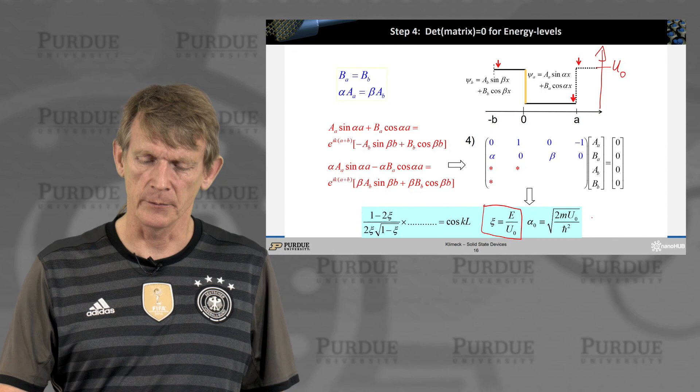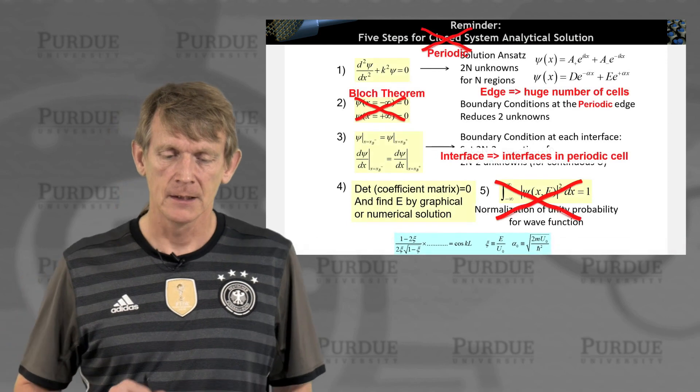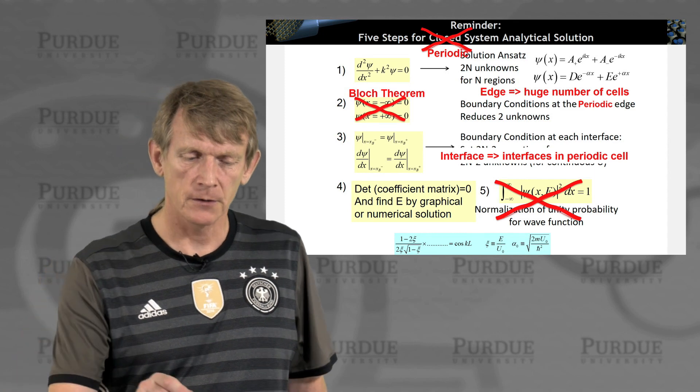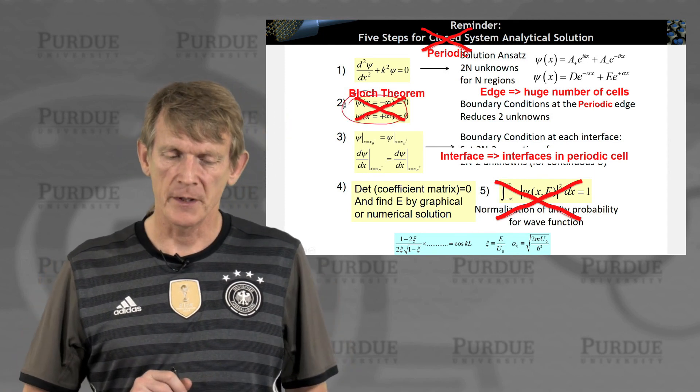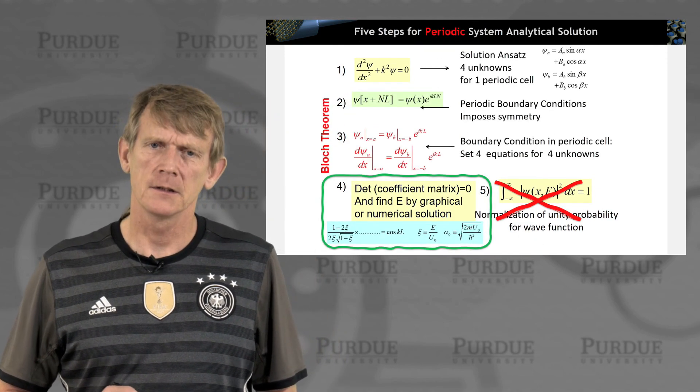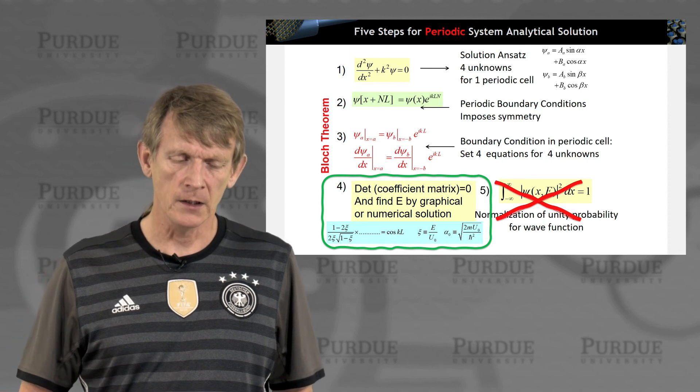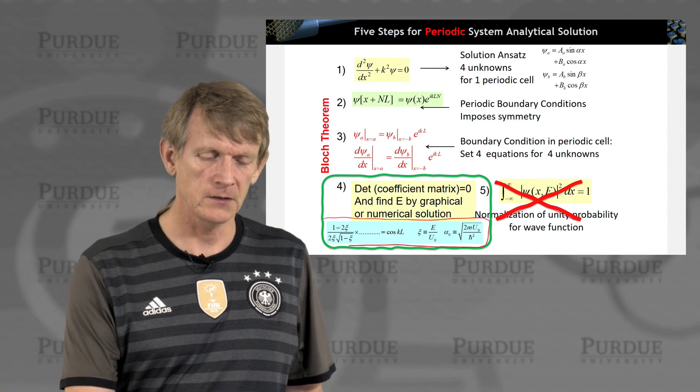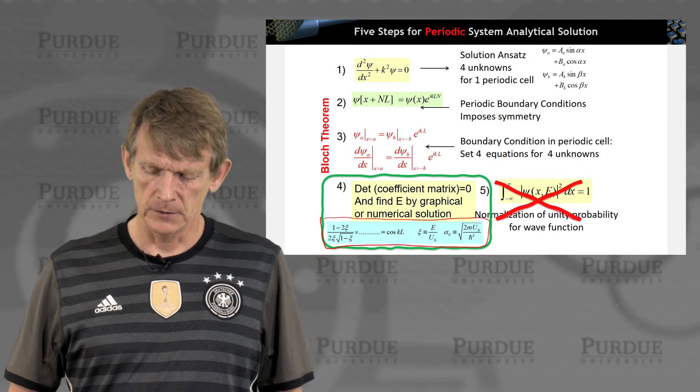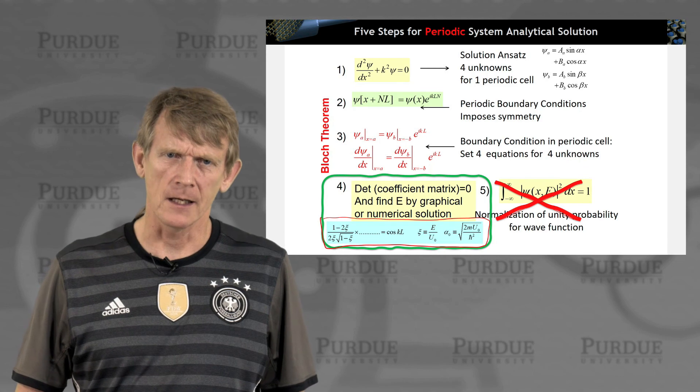So, what we do is we modify the boundary conditions here to be periodic, and we modify the boundary conditions here to enable us to look at the unit cell. We calculate the determinant matrix as we did before, and we get a solution to it that looks reasonably horrendous. And in general, we don't mess around with determining the final coefficient. So, these are the five steps for a periodic system to get an analytical solution.